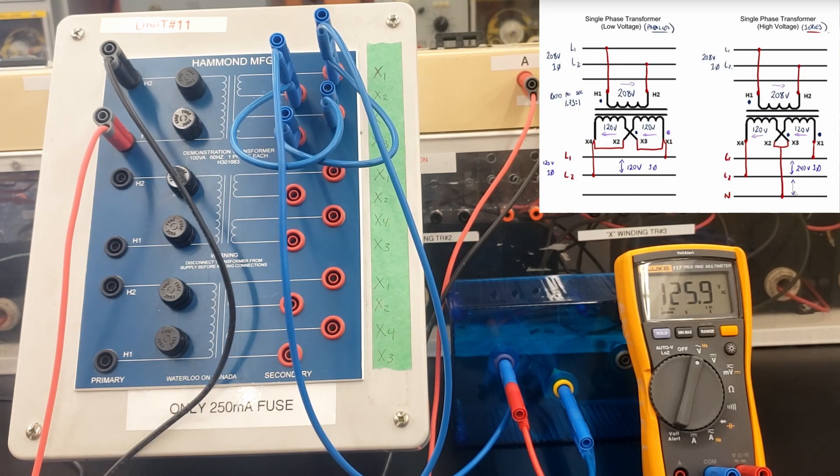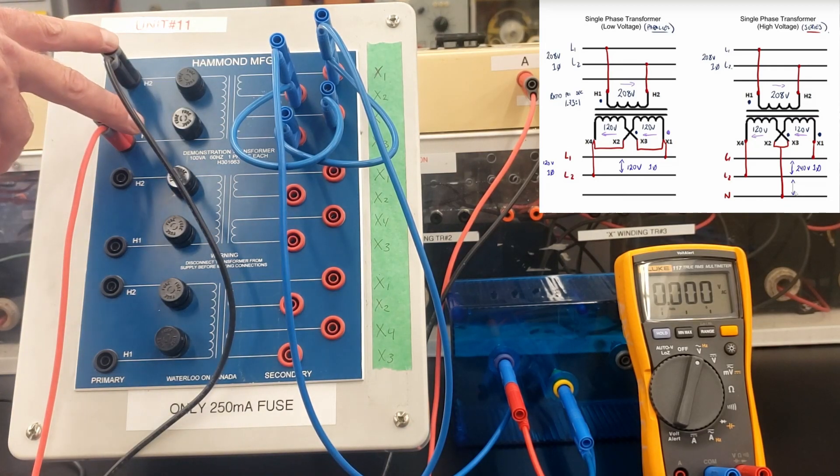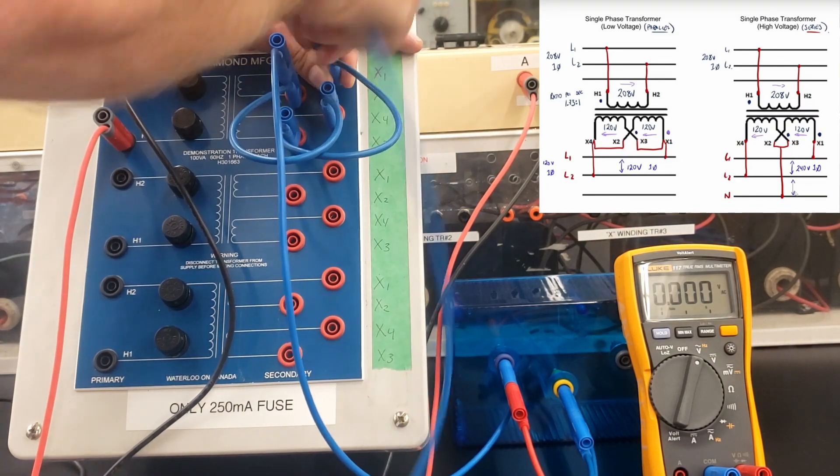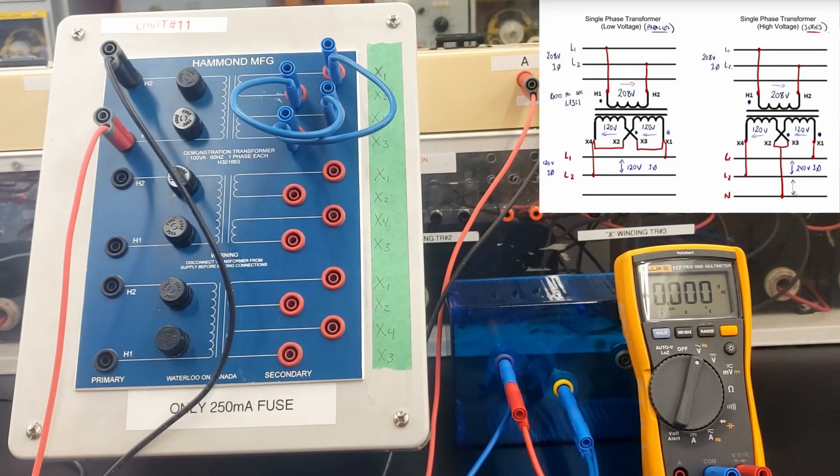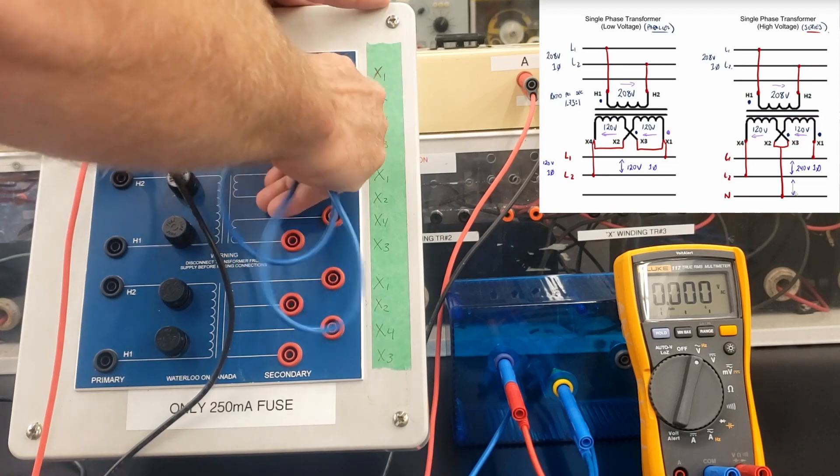We're doing the parallel connection right now for our single-phase transformer. We have basically 2.10 coming in to the primary. And on each of our secondary windings, being seen on X1 to X2 or X3 to X4, we have 125 volts. That's our parallel connection. The next thing we're going to do is the series connection. There's a number of questions for you to answer on pages 12 through 14. We're doing the high voltage or the series connection of the windings.